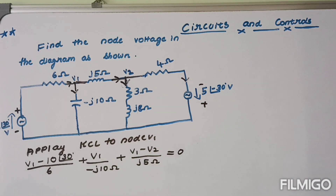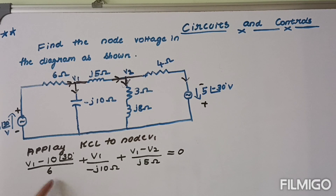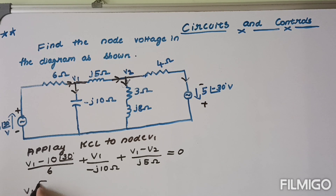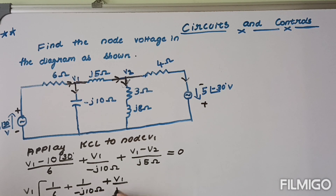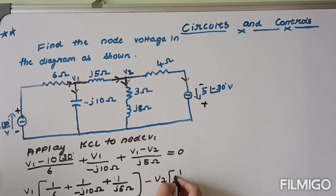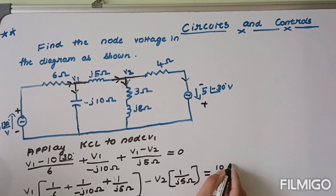Taking V1 as common, the coefficient of V1 is (1/6 + 1/(−j10) + 1/(j5)), and the coefficient of V2 is −1/(j5). The right-hand side becomes 10∠30° divided by 6. This is equation one. Now in the calculator, you can substitute 1/6 + 1/(−j10) + 1/(j5) directly and get the resultant in one step — you don't need to compute each fraction separately and add them.